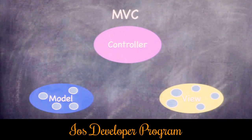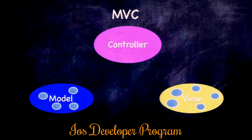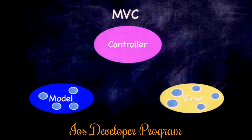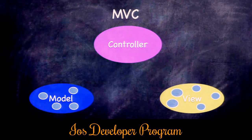MVC is essentially a strategy for how to organize all the classes in your application. We divide all classes into one of three camps: the Model, the Controller, or the View. The Model is the 'what' of your program. In our card matching game, the cards, the deck, and the logic for how the game is played are all UI-independent and belong in the model.